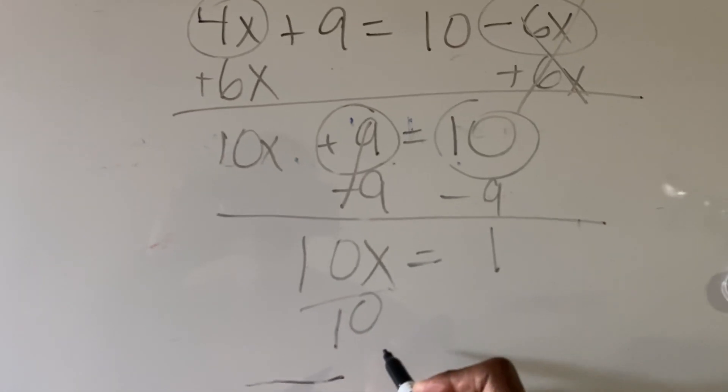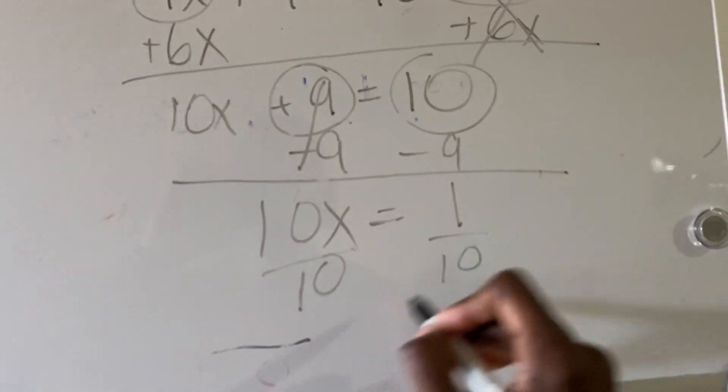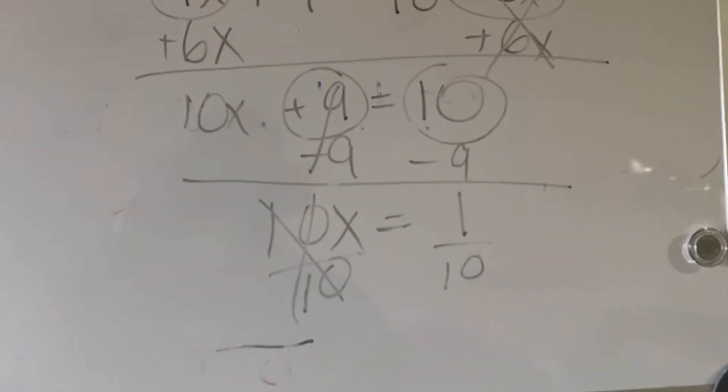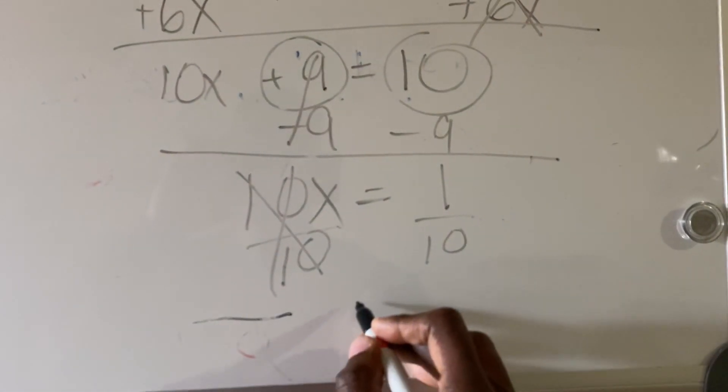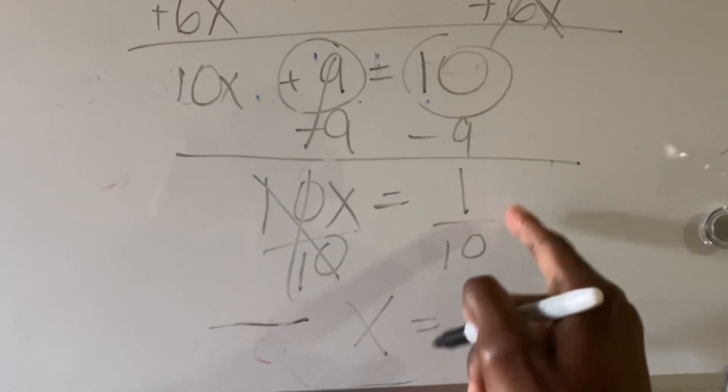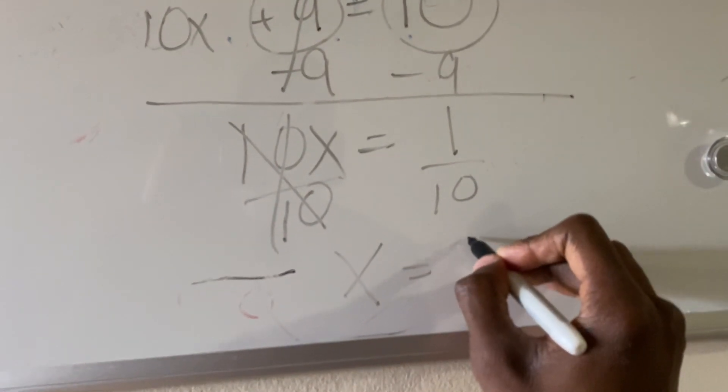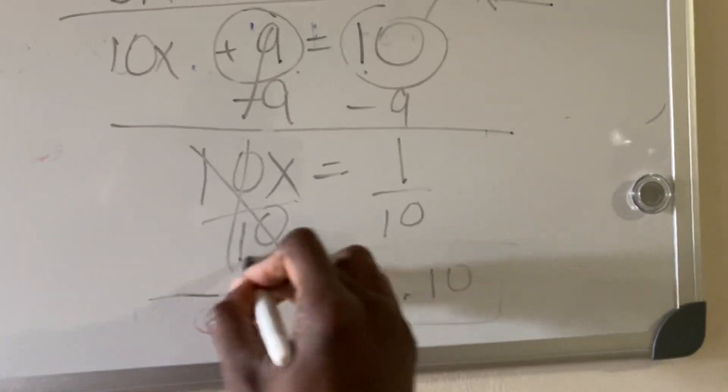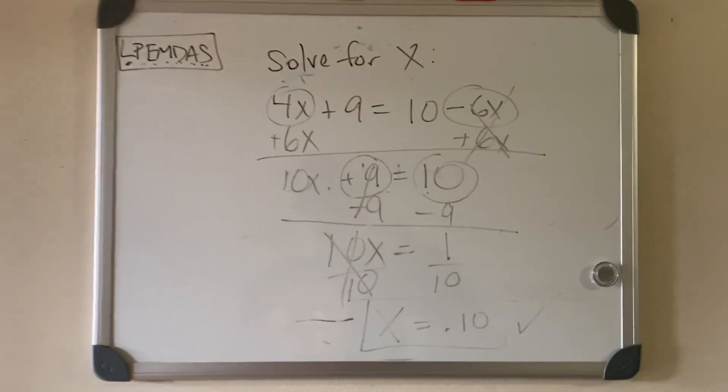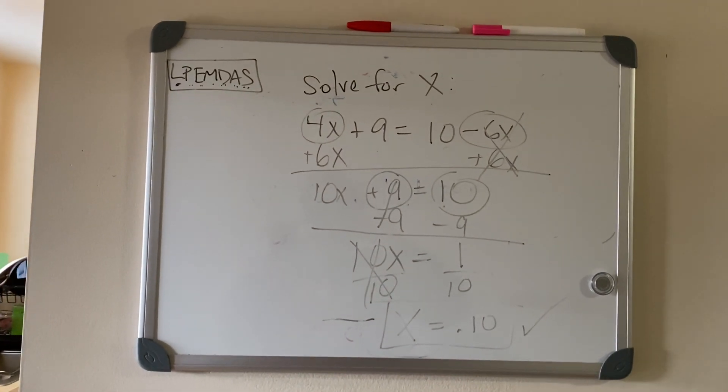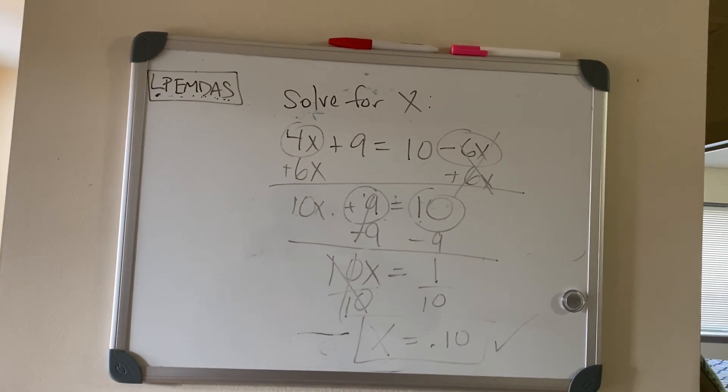Divide both sides by 10. 10 divided by 10 is one. We don't need a one in front of that x, it's the same thing. X equal one over 10 is going to be 0.10, and that is your final answer. X is equal to 0.10. Like, comment, subscribe for more videos.